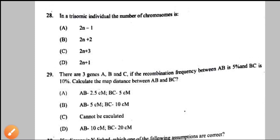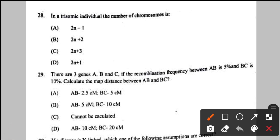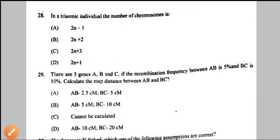Question number 28: in a trisomic individual the number of chromosomes is — trisomy means one additional chromosome is present beyond the basic set, so it is 2N + 1 — option D.